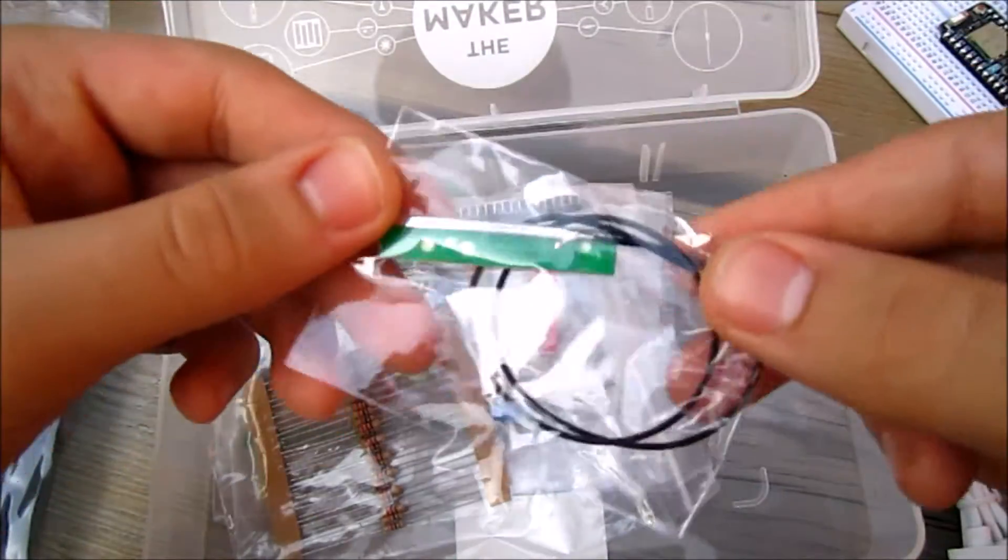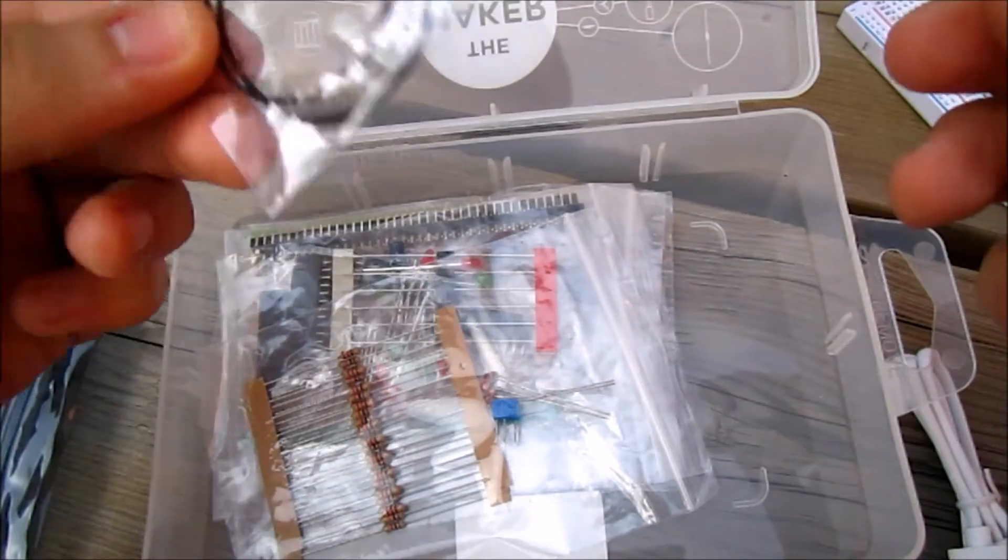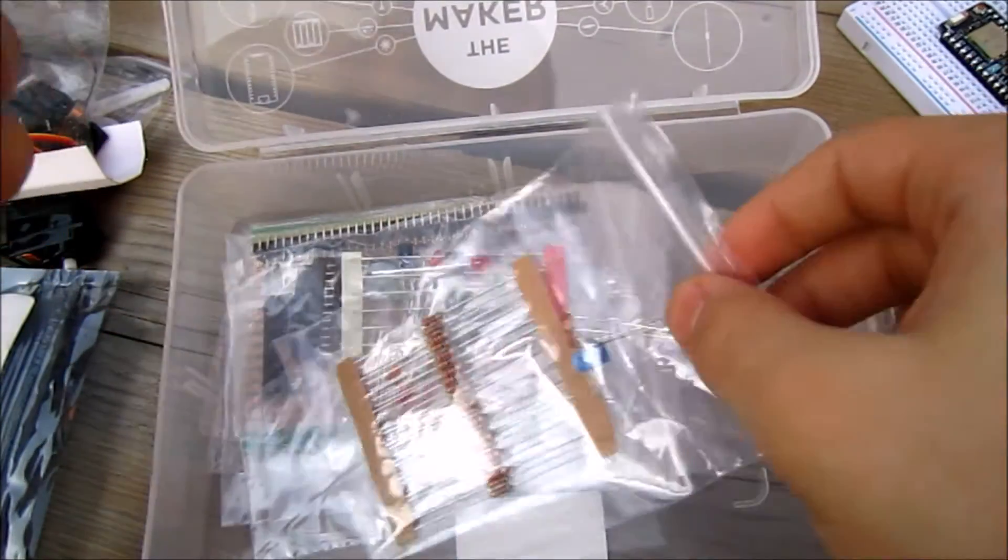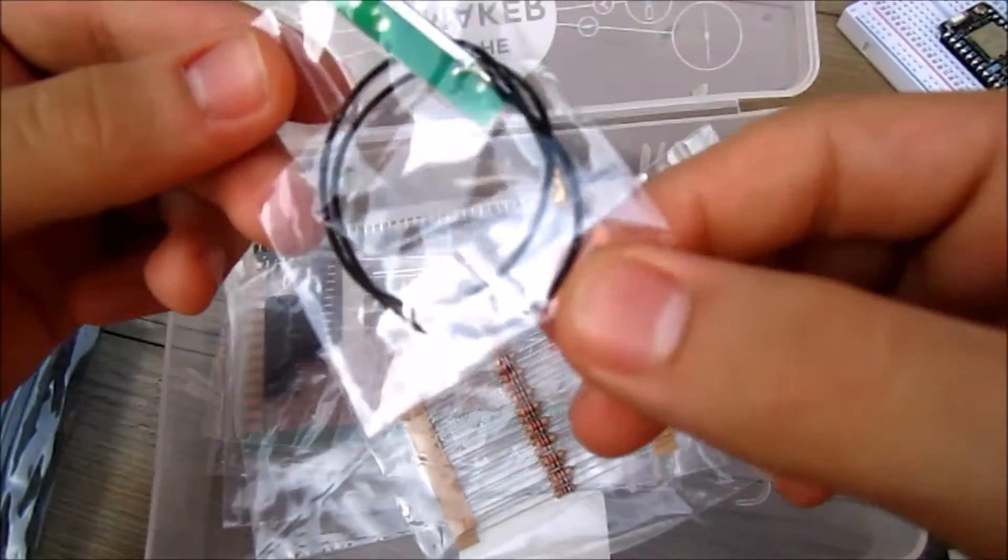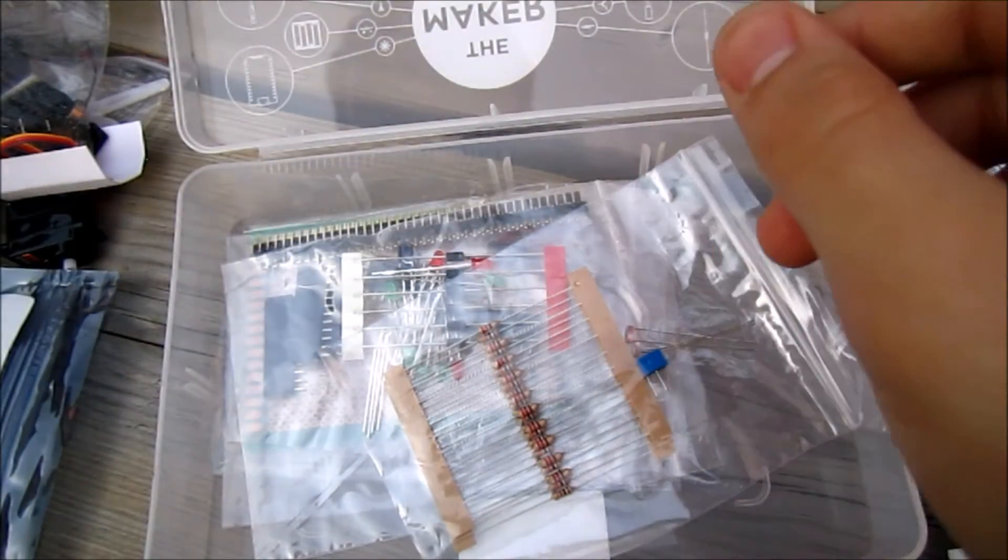Over here we have a Wi-Fi antenna. If you need a Wi-Fi antenna, you can use it and plug it into the Photon. Now this Photon has headers.